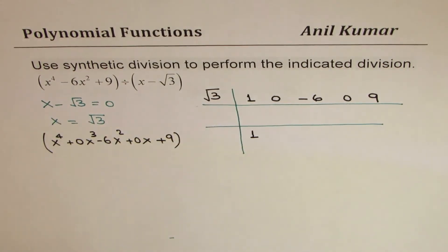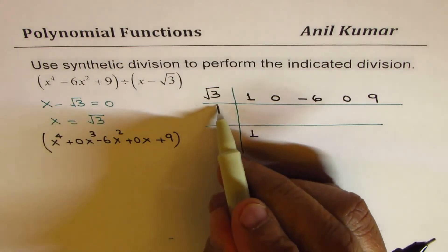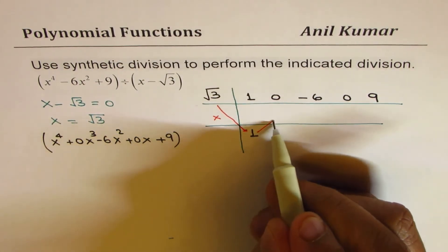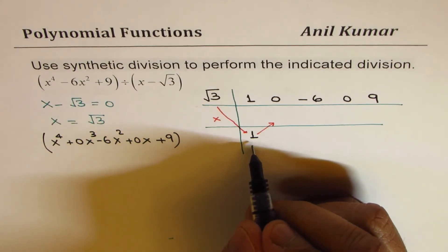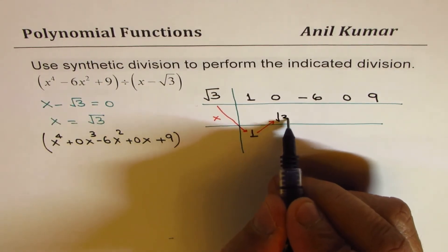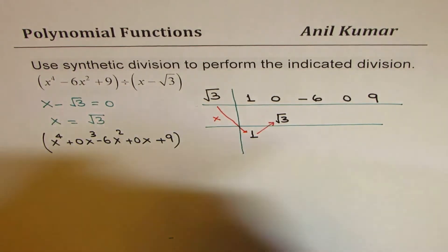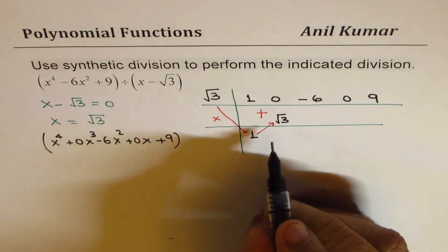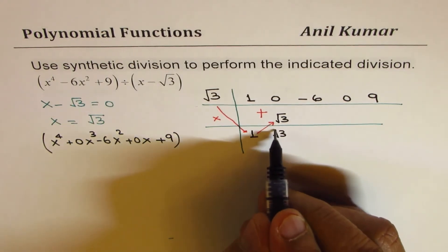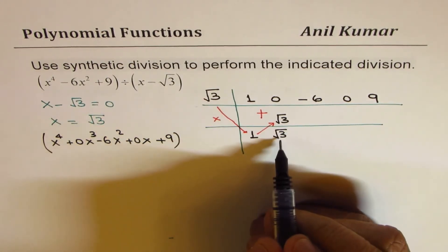Now we are going to multiply square root 3 by 1. So we will times this and write the product in that position. So when I times square root 3 by 1, we get square root 3. And then now we are going to add 0 with square root 3. When you add, you get square root 3. Now this is repeated.